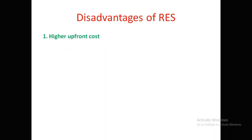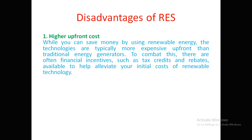The first disadvantage is higher upfront cost — the installation cost is very high for renewable energy sources. While you can save money using renewable energy, the technologies are typically more expensive upfront than traditional energy generators. To combat this, there are often financial incentives such as tax credits and rebates available. Governments have policies to help with these costs, which can eradicate this disadvantage.